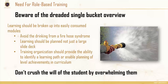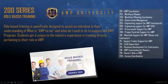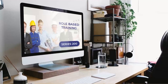Don't crush the will of the student by overwhelming them. When bringing training forward, we need to consider the needs of the student. In the university, we have multiple modules — from the AWP coordinator to access coordination, construction management, work face planning, and work face planning coordinator — building specific learning paths around those roles. Role-based training is key to success: bringing people forward who know who they're to interact with and what they're to produce. That is our Series 200 training.